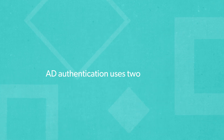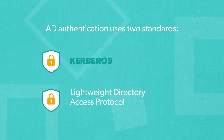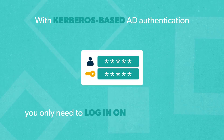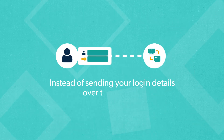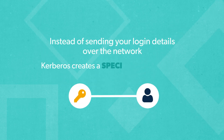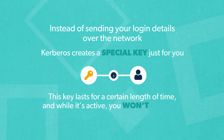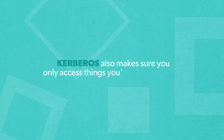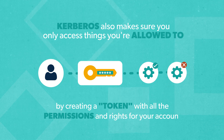AD Authentication uses two standards: Kerberos, and Lightweight Directory Access Protocol, or LDAP. With Kerberos-based AD Authentication, you only need to log in once to access multiple things on the network. Instead of sending your login details over the network, which was risky with older methods, Kerberos creates a special key just for you. This key lasts for a certain length of time, and while it's active, you won't have to keep re-entering your password. Kerberos also makes sure you only access things you're allowed to, by creating a token with all the permissions and rights for your account.